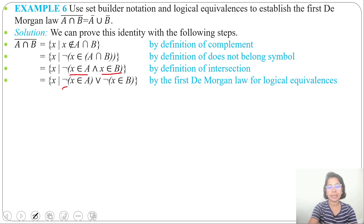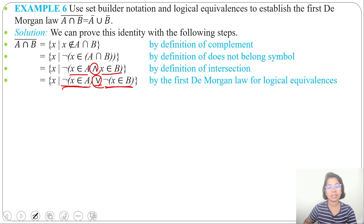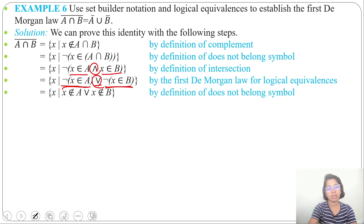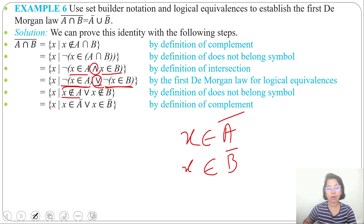So ¬(x ∈ A AND x ∈ B) can be written as ¬(x ∈ A) OR ¬(x ∈ B) — the AND symbol changes to OR. So ¬(x ∈ A) means x does not belong to A, and ¬(x ∈ B) means x does not belong to B.